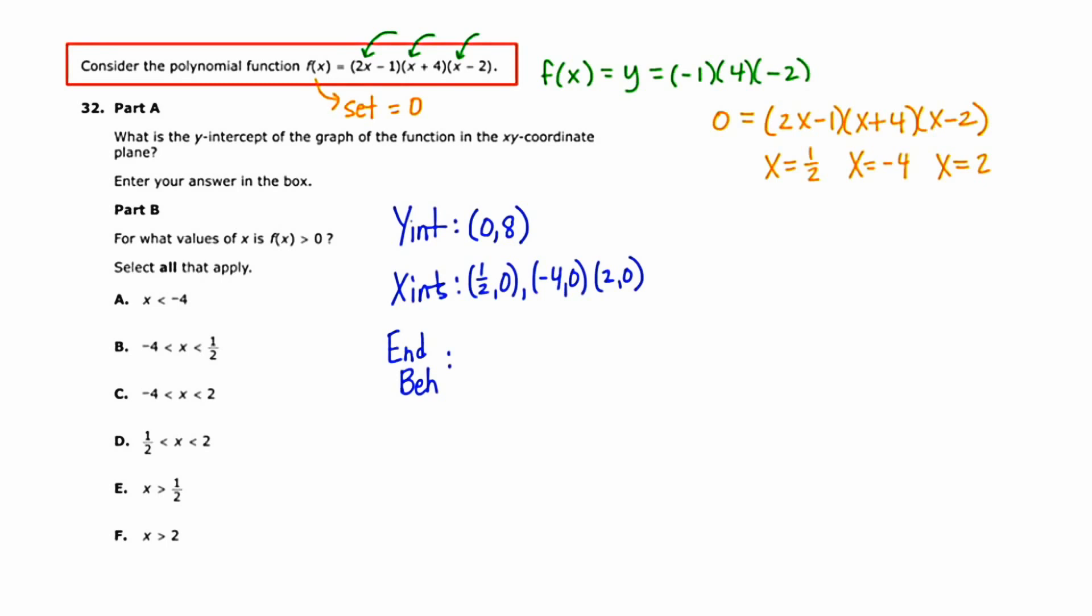Now this third element is called end behavior. The end behavior can be determined by looking at the dominant term of the polynomial function. Now when your polynomial function is in factored form as it is here, it's a little bit harder to tell. And we don't want to waste time foiling or multiplying these three binomials together. So I just want you to imagine for a moment, if we did actually multiply these three binomials together, what would your first term be, or what would the term with the largest exponent be?